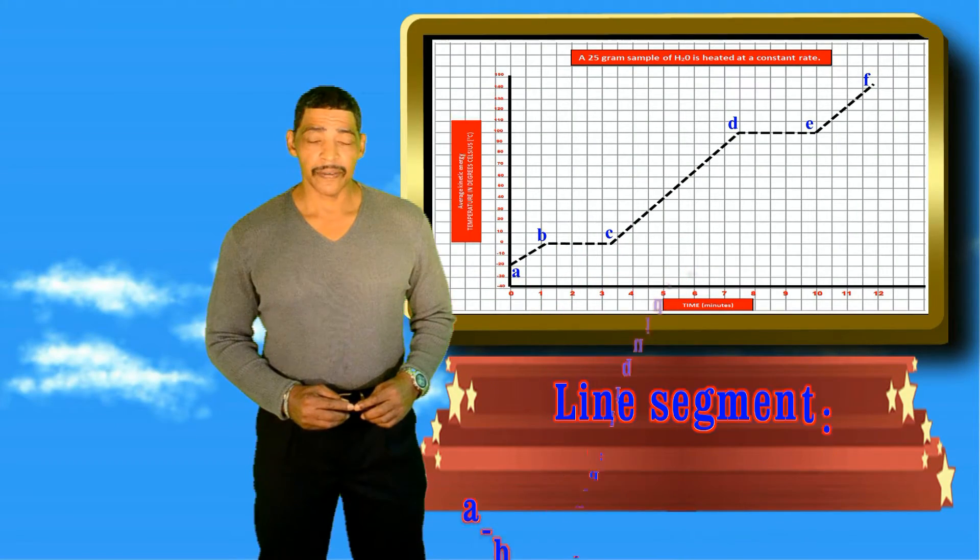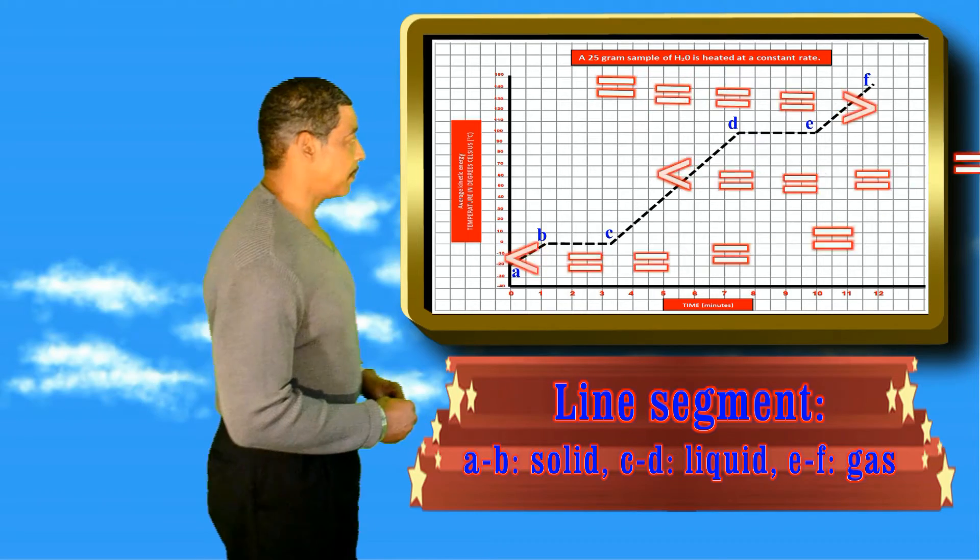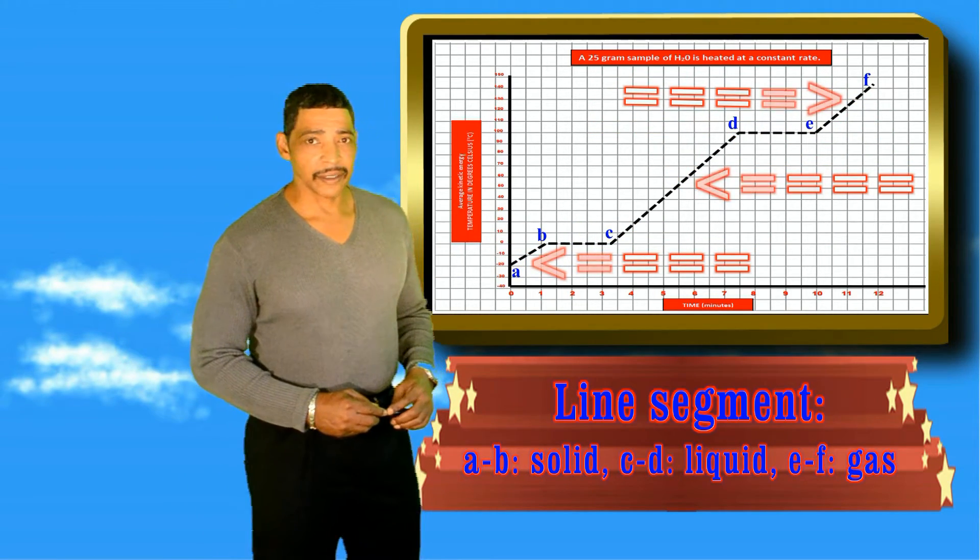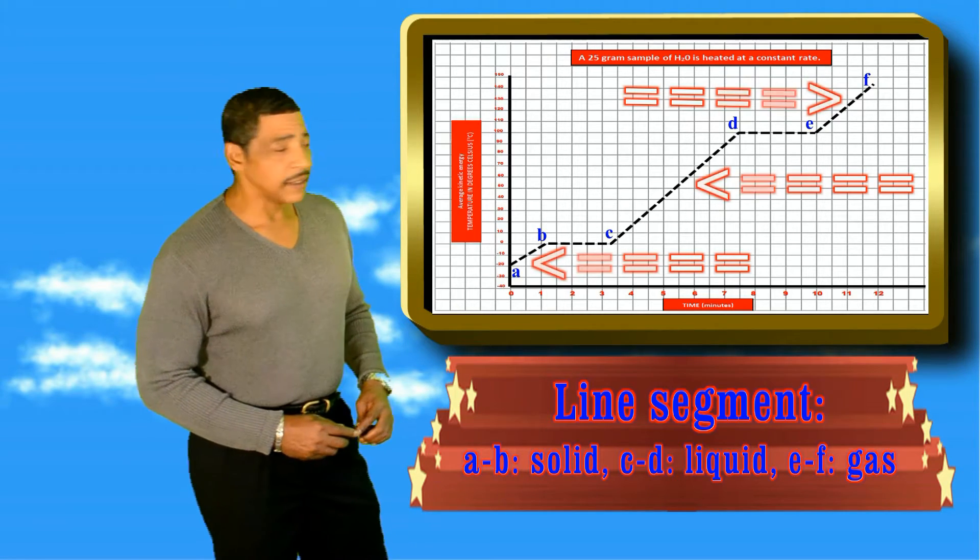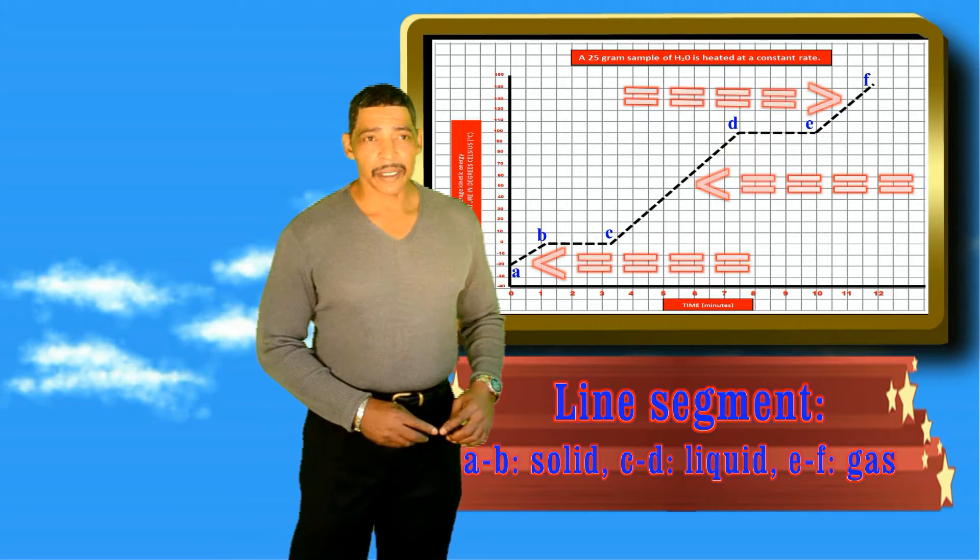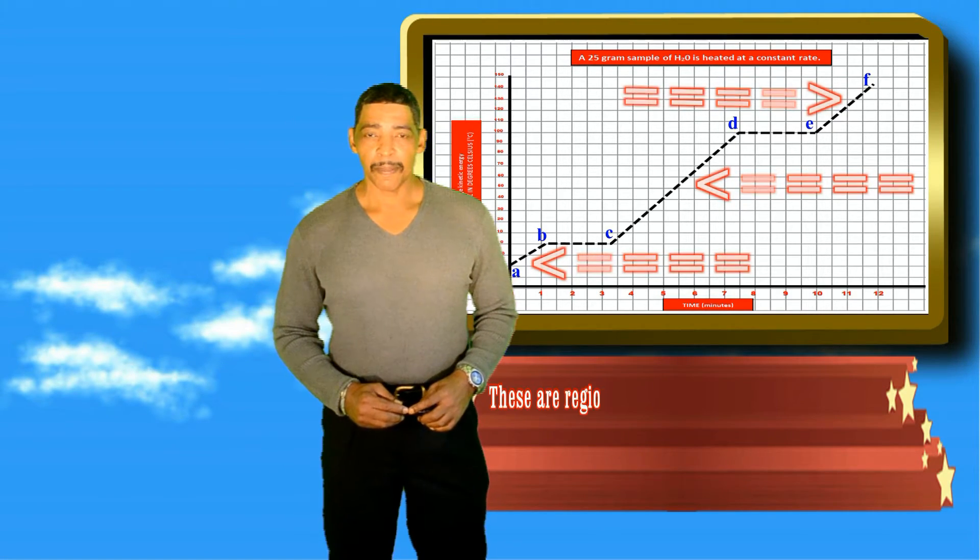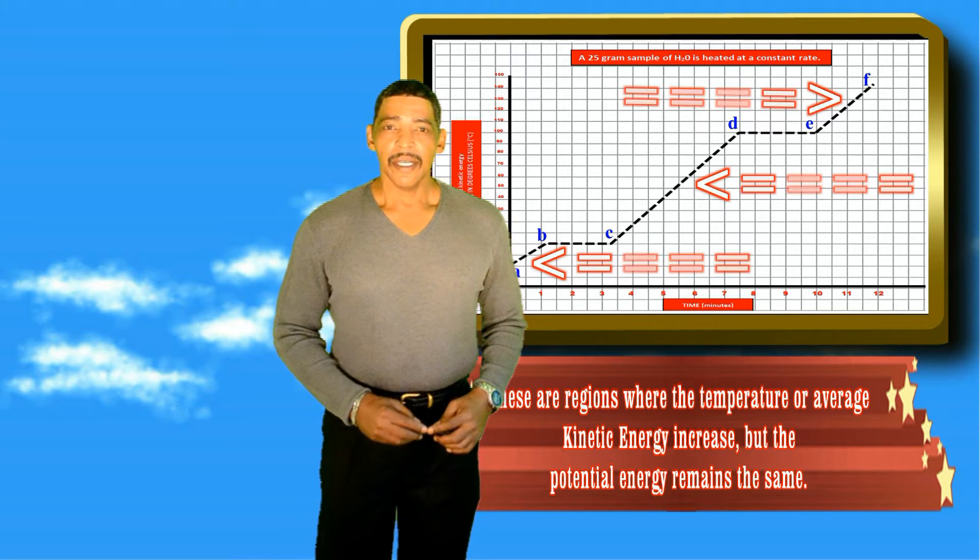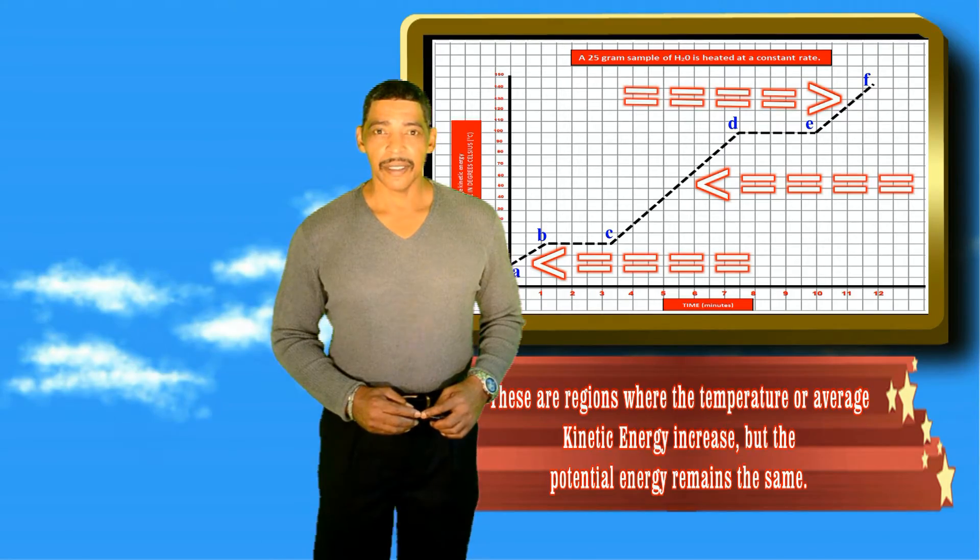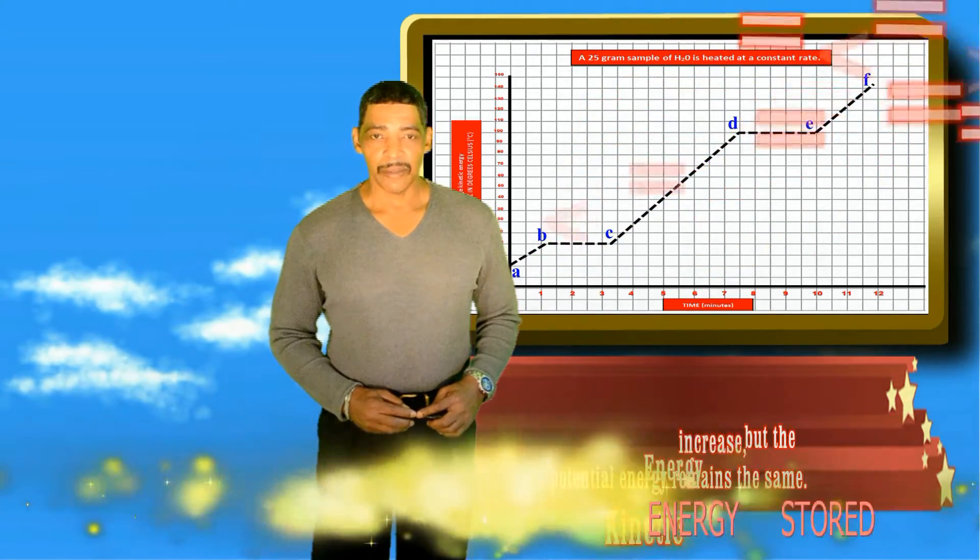A heating curve consists of both diagonal and horizontal lines. In this illustration, line segment AB represents the solid phase, line segment CD represents the liquid phase, and line segment EF represents the gas or vapor phase. During these points on a heating curve, the average kinetic energy or temperature is increasing. However, the potential energy in the system remains the same.